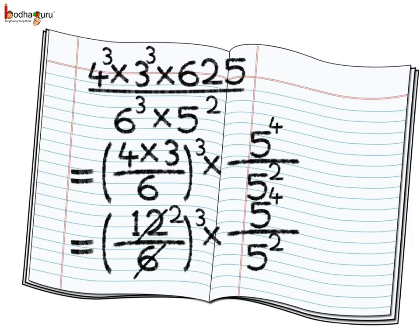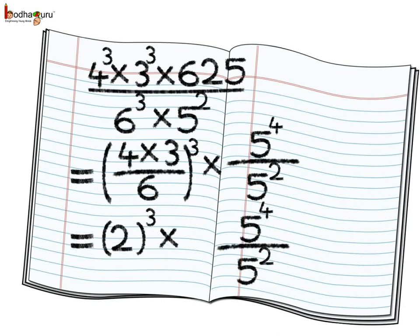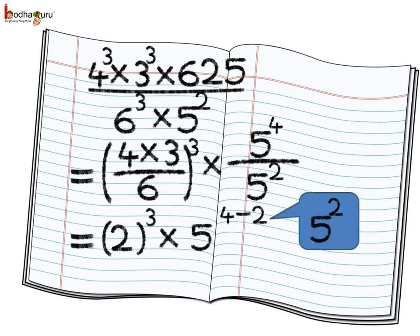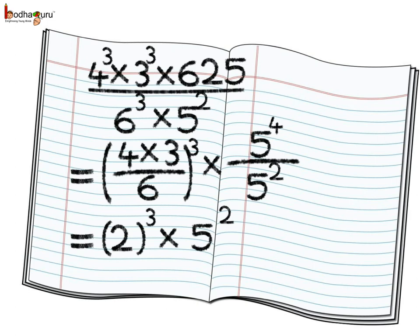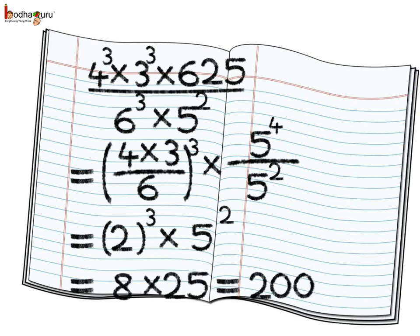Simplifying, 4 multiplied by 3 divided by 6 means 12 divided by 6, and simplifying we get 12 divided by 6 raised to power 3. Since 6 twos are 12, we get 2 to the power 3. Then 5 to the power 4 divided by 5 to the power 2 means 5 to the power 4 minus 2, that is 5 squared. So the answer is 2 cubed multiplied by 5 squared. 2 cubed equals 8, 5 squared equals 25, so 8 multiplied by 25 equals 200. Thus the answer is 200.